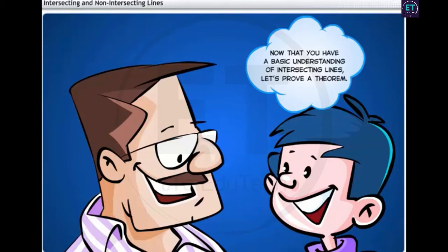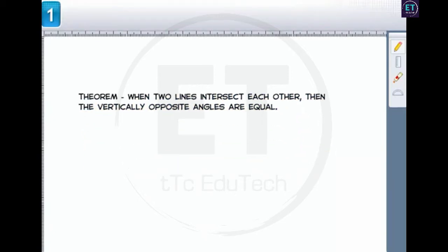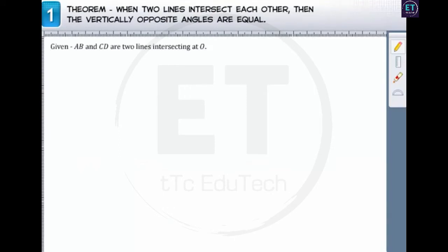Now that you have the basic understanding of intersecting lines, let's prove a theorem. The theorem states that when two lines intersect each other, then the vertically opposite angles are equal. Let lines AB and CD intersect at a point O. We have to prove that angle AOC is equal to angle BOD, and angle BOC is equal to angle AOD.